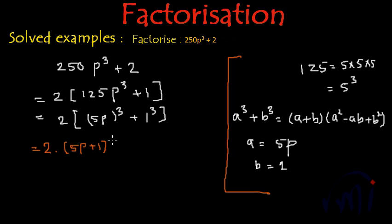And inside the bracket we have a² which will be 25p², minus ab so minus 5p, plus b² which is 1.